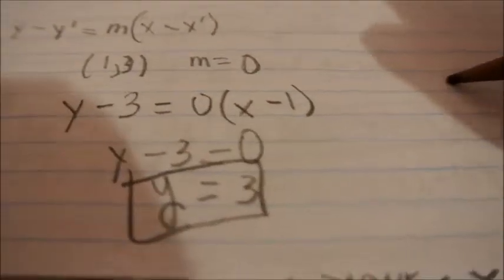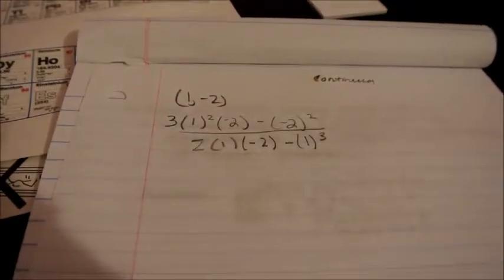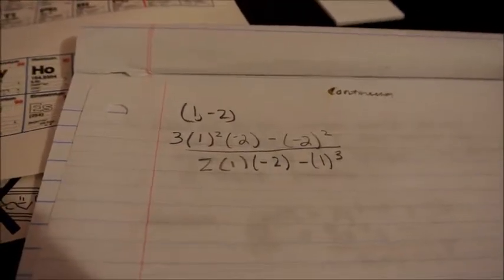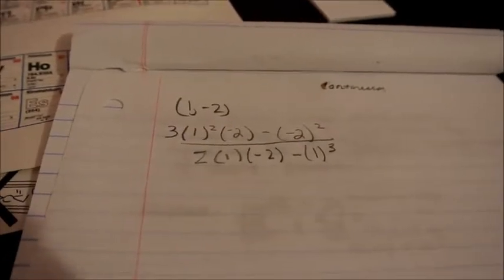Which means, if this is the y-intercept, this is the x, 1, 2, 3, this would be the line. Now we are not done, we have another part to the second part. We did the point 1 comma 3, now we have to do the same thing for the point 1 comma negative 2.